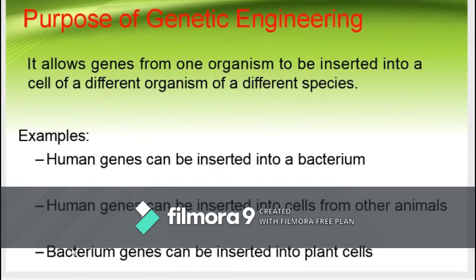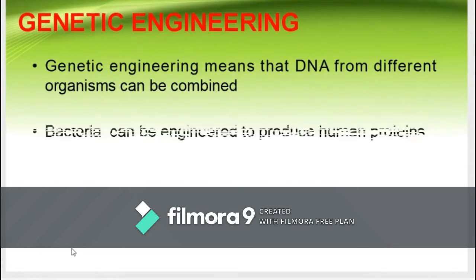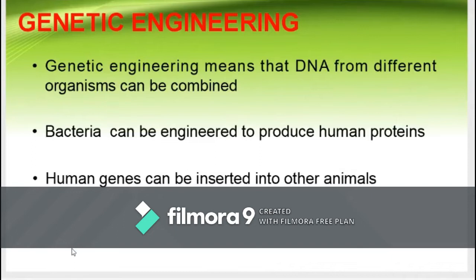Examples include human genes inserted into bacterium or cells from other animals, or bacterium genes inserted into plant cells. Genes are the factor that controls the inheritance of a character or trait, such as hair color, the color of your eyes, skin color, and many more. Going back, genetic engineering means that DNA from different organisms can be combined.